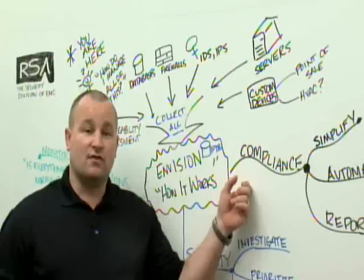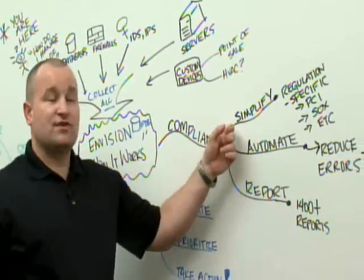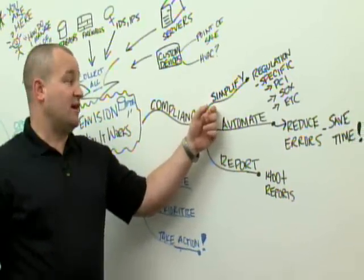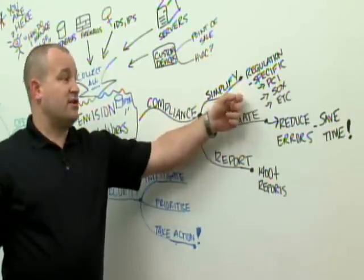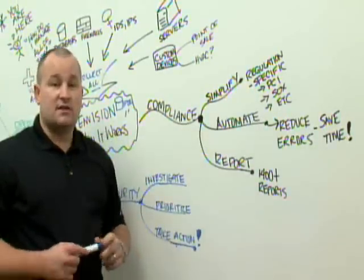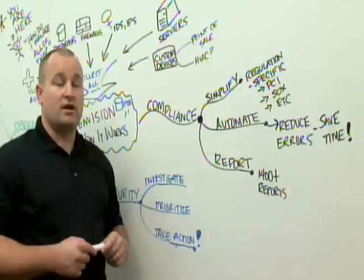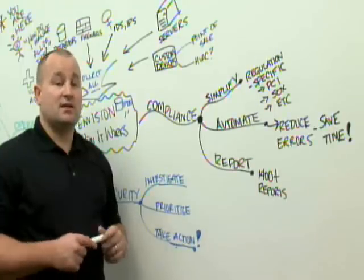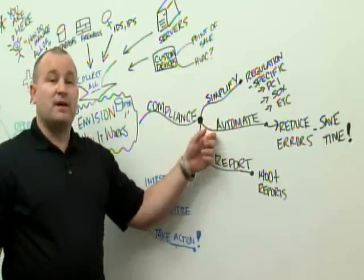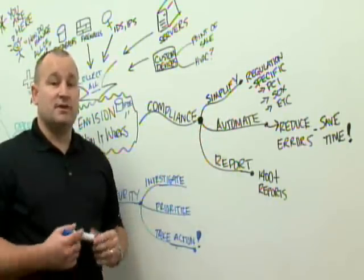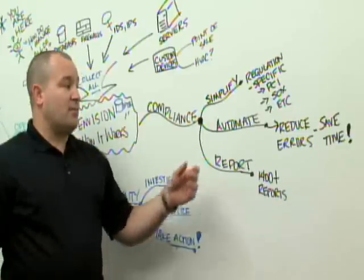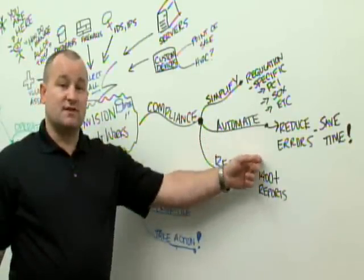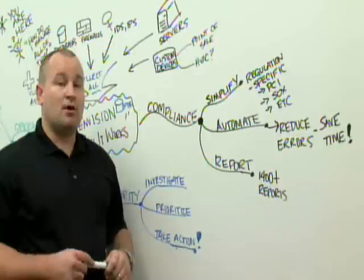Compliance, first of all. How do we achieve compliance? We'll help the customer simplify their environment. We have regulation-specific reports that address PCI, Sarbanes-Oxley, HIPAA, various different regulations, and we keep that content current. We also automate the process, so instead of having people digging through logs on a daily basis and trying to assemble that data, we help them automate that process, which reduces errors and vastly speeds up that process.